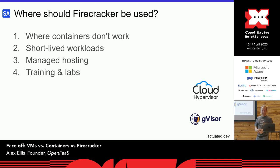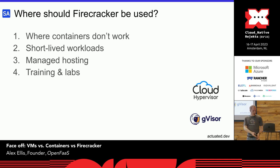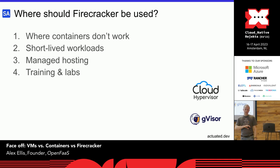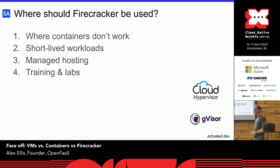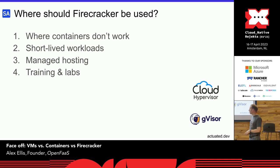Firecracker should be used where containers don't work very well. For CI, the security boundary of containers isn't really sufficient. For short-lived workloads — basically what AWS says they built it for — serverless workloads. But it has been stretched into managed hosting, like Apache Airflow. Training and labs are another use case — ephemeral environments. If you do need GPU support, there's something very similar called Cloud Hypervisor, forked off Firecracker and developed more by the Kata Containers team. GVisor can also be an alternative if you don't need a full VM but want things locked down more, and it slots right into Kubernetes.